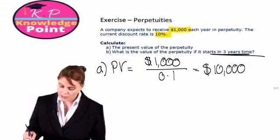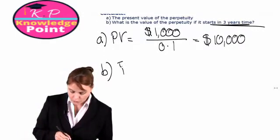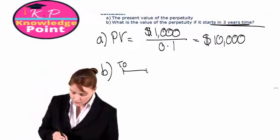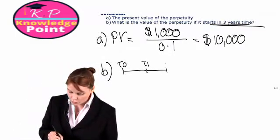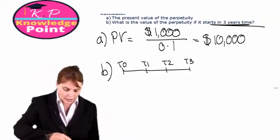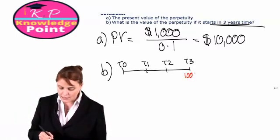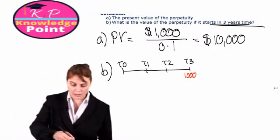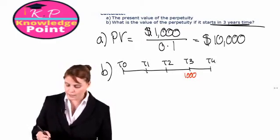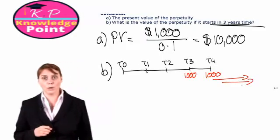If we look at a timeline for this one, we're in T0, this moment in time, then T1, T2, then in T3, so in three years' time, we're going to receive our first payment of $1,000. In T4, we'll receive our next payment of $1,000, and so on forevermore.